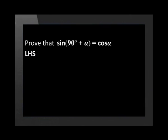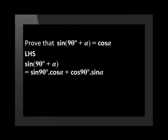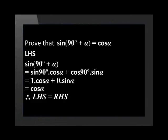Using the compound angle identity for sine, we can say that sin(90° + α) is equal to sin 90° multiplied by cos α plus cos 90° multiplied by sin α. This is equal to 1 multiplied by cos α plus 0 multiplied by sin α, which yields cos α. Therefore, the left-hand side is equal to the right-hand side.